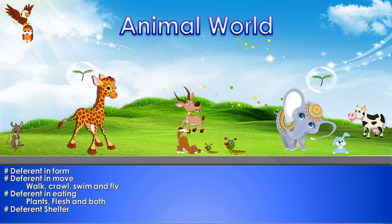Some animals, like cats, dogs, and bears, eat both plants and the flesh of other animals. So we have three categories: animals that eat only plants, animals that eat only flesh, and animals like dogs, bears, and cats that eat both.